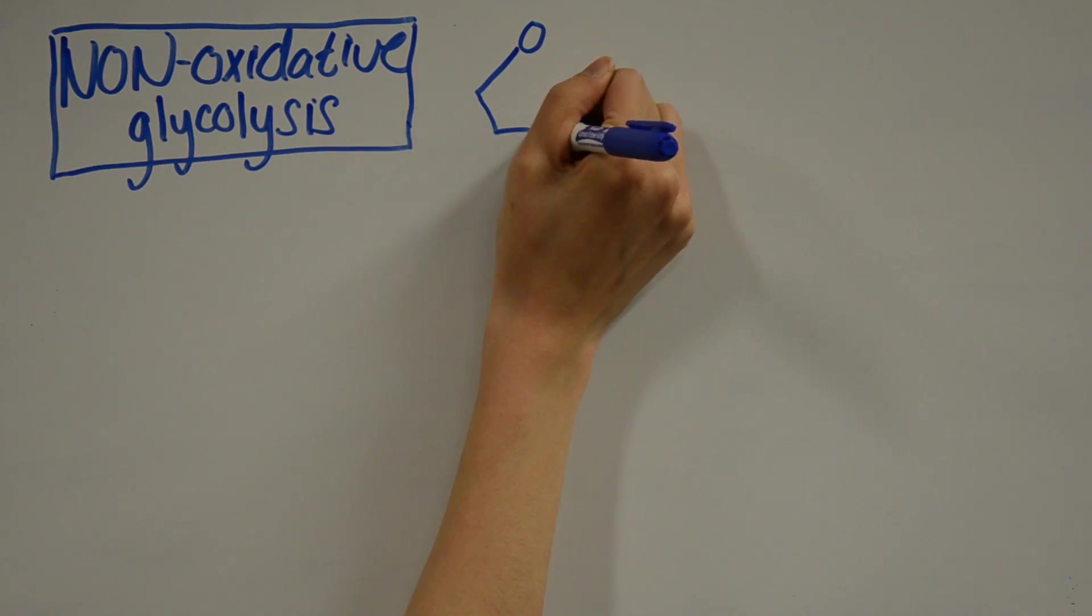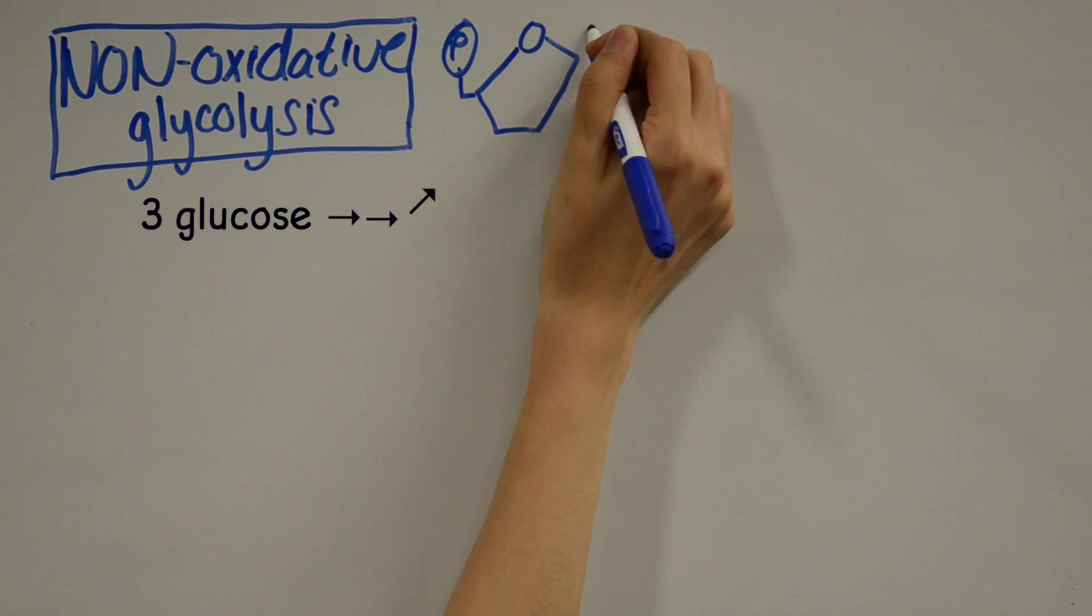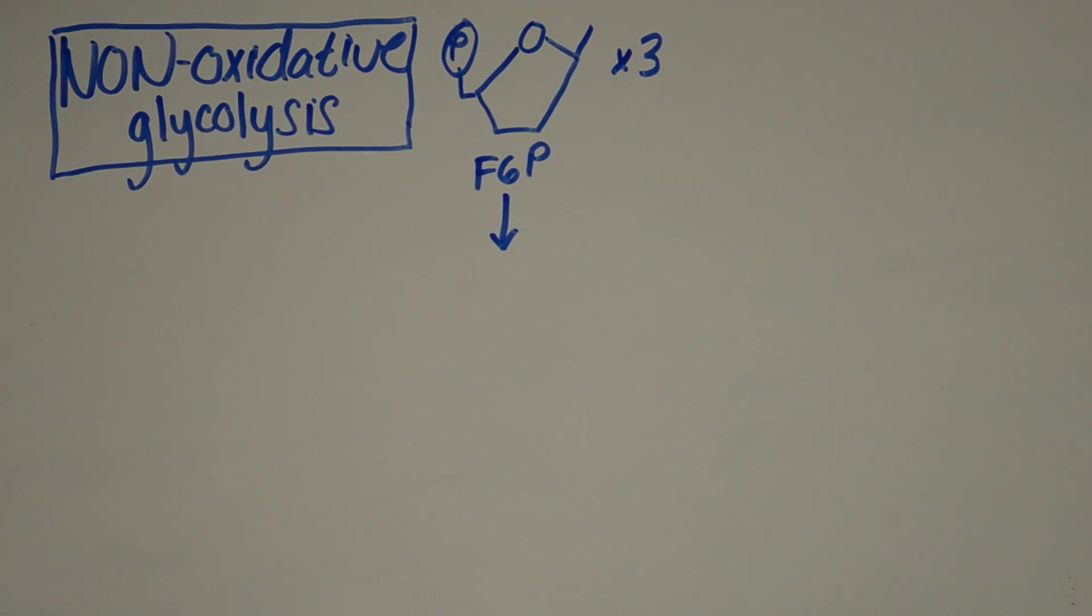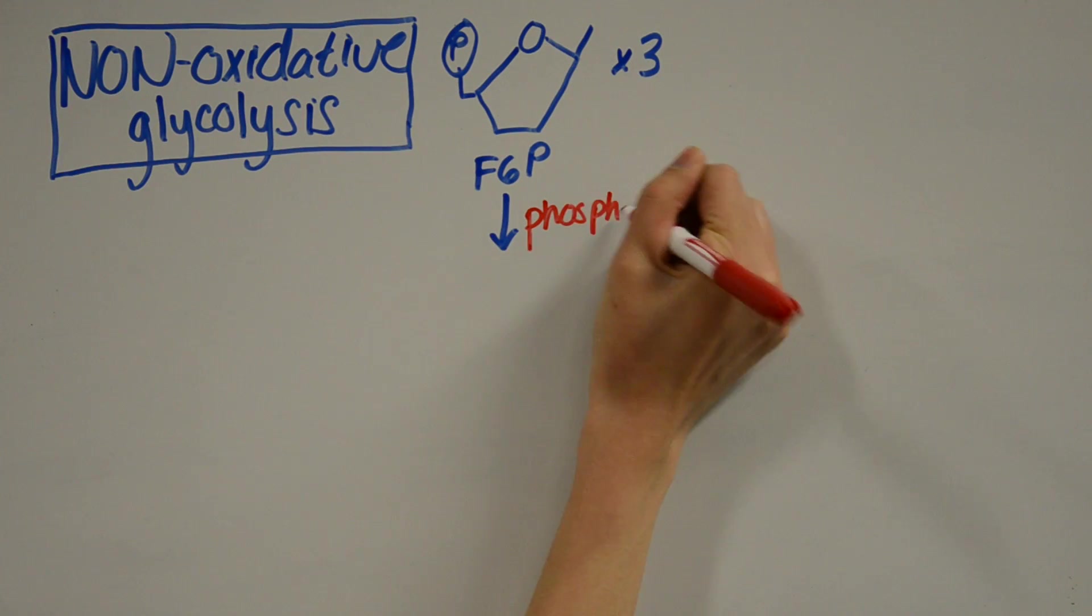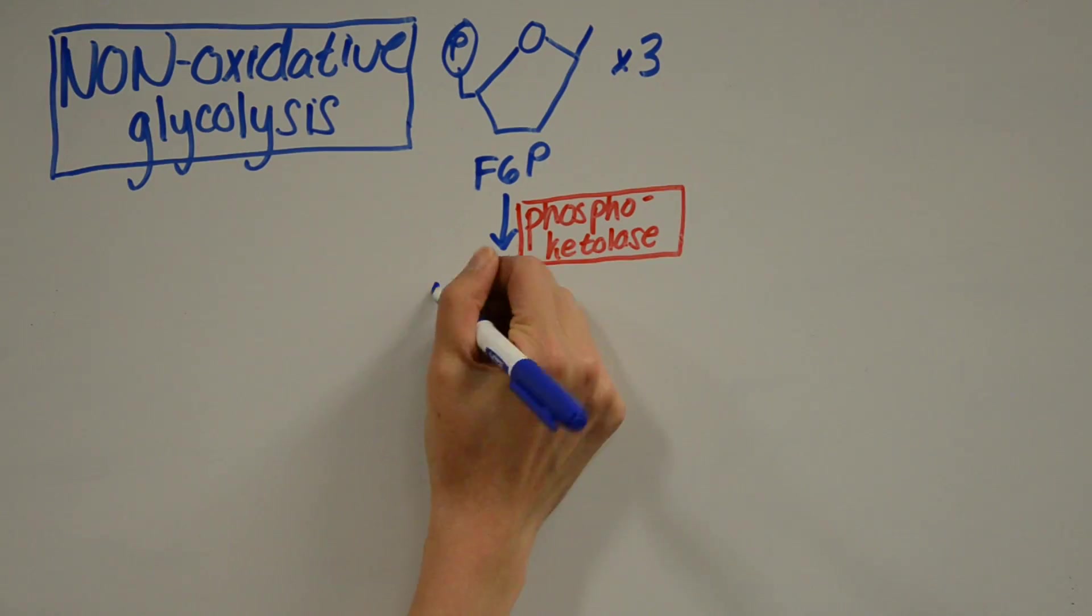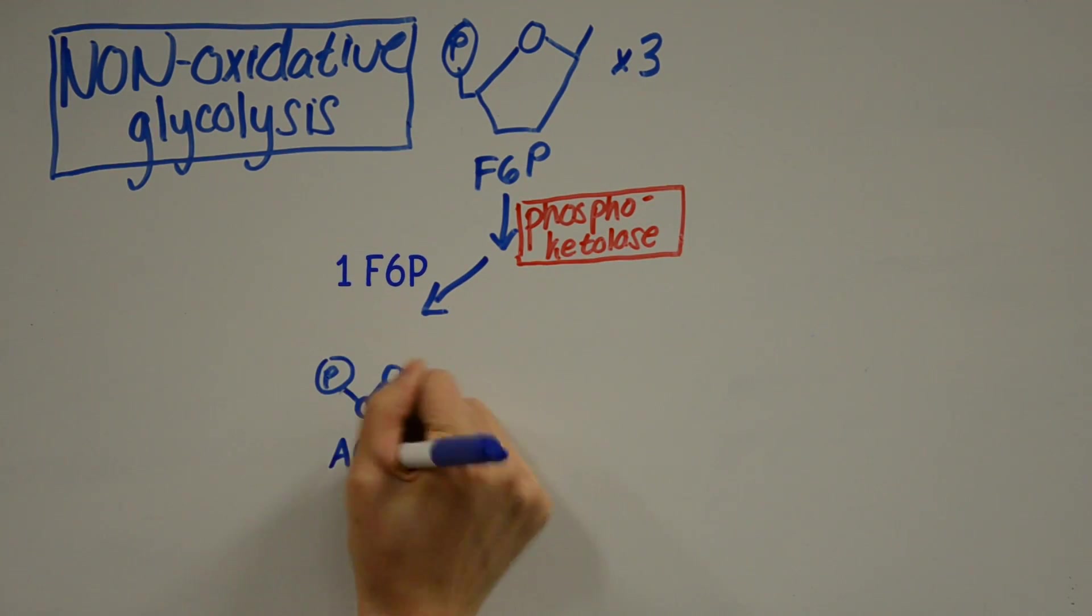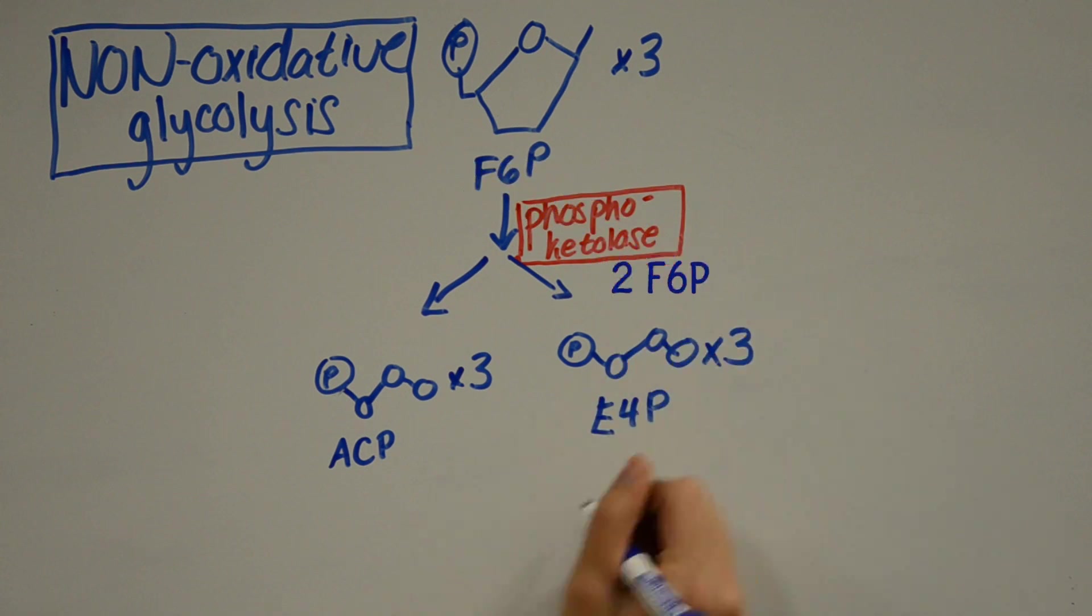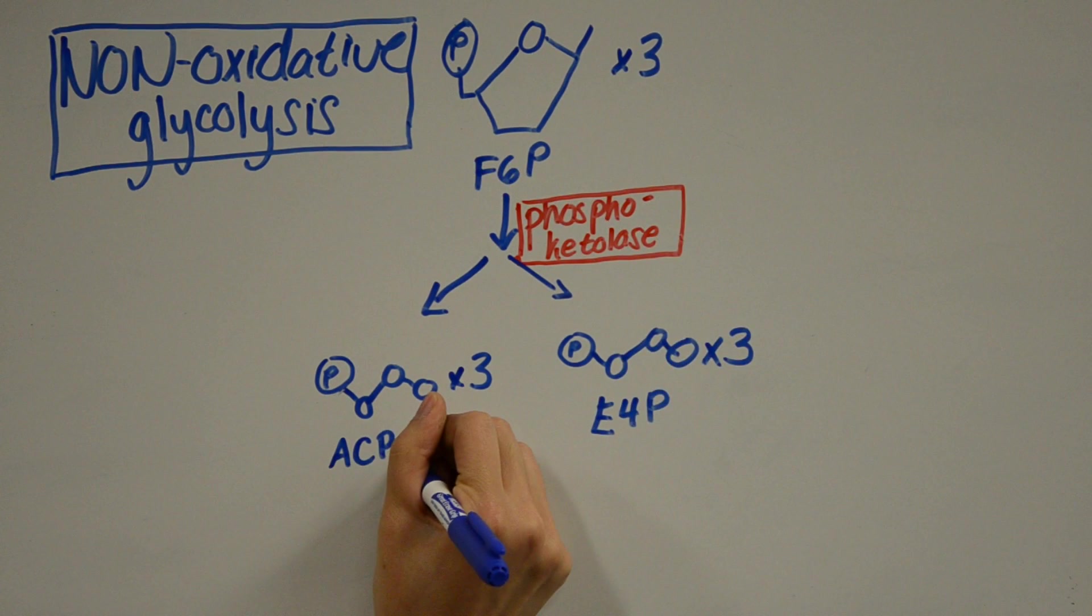So, in their pathway, three glucose molecules get converted into three fructose 6-phosphate molecules, just like in regular glycolysis. This is where things get interesting. These three F6P molecules get broken down into three acetyl phosphates, or ACP, molecules, and then three erythrose 4-phosphate, E4P, molecules by the enzyme phosphoketolase. This step is super important because it's irreversible and provides the main driving force for this reaction to occur.